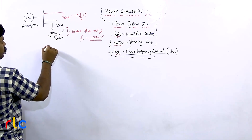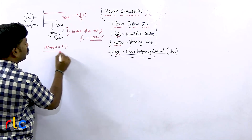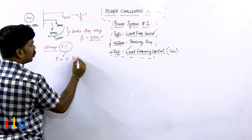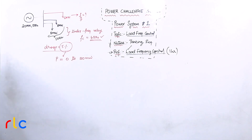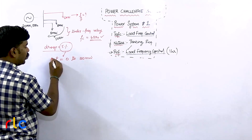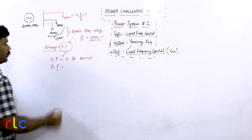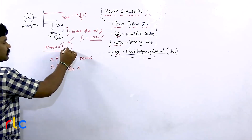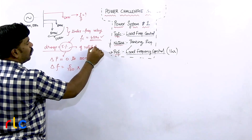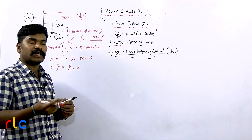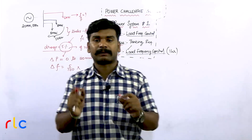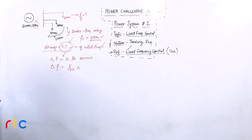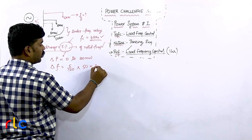He has also given the droop as 5%. What does 5% droop indicate? It indicates that when the load varies from no load to full load — that is, 0 to 20 megawatt — the change in frequency is 5% of the rated frequency. So, (5/100) × 50 = 2.5 hertz. That is the change in frequency from no load to full load.